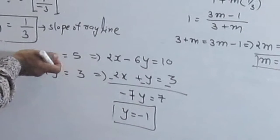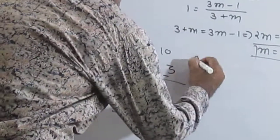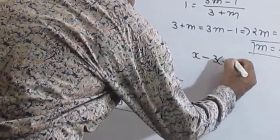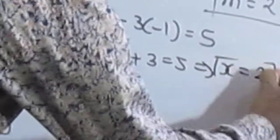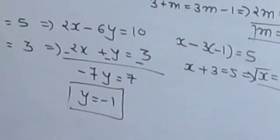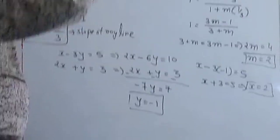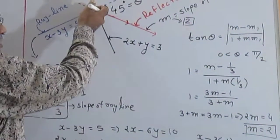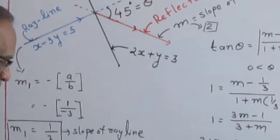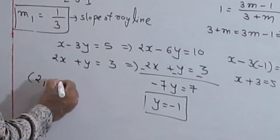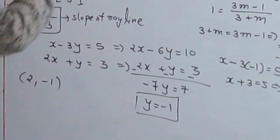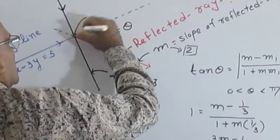Put the value of y here. So x minus 3 times minus 1 equals 5, so x plus 3 equals 5, that implies x equals 2. So we have the intersection point: x equals 2 and y equals minus 1. The intersection point is (2, minus 1).